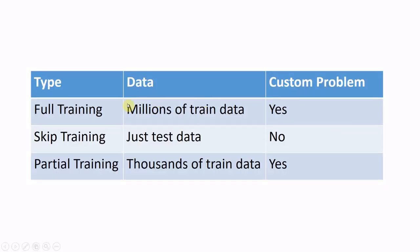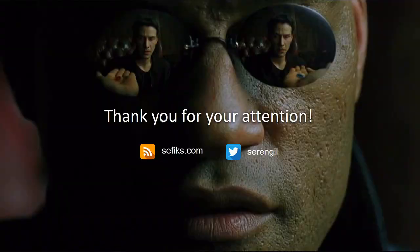To sum up, you can apply full training in transfer learning, but this is not common — you need millions of training samples and powerful hardware. Secondly, skipping training is an alternative where you use pre-trained weights of a popular model, though you cannot customize the problem and only need to save the weights with no powerful hardware required. Finally, you can apply partial training — lock and freeze early layers, customize the output layer for your problem, and you'll need thousands of training samples, which is acceptable. Thank you for watching and see you next time.